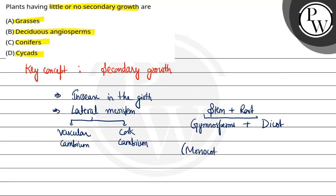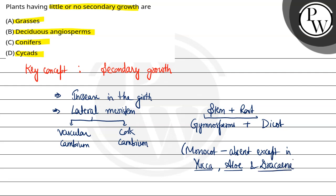Monocots me yeh absent hoti hai, except in yucca, aloe, and dracaena. Because monocot me yeh vascular cambium nahi hota hai — they lack vascular cambium.